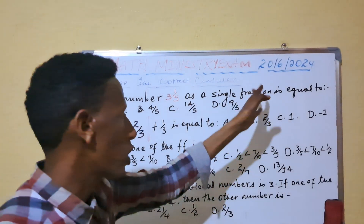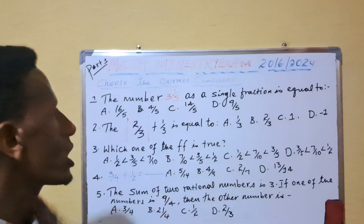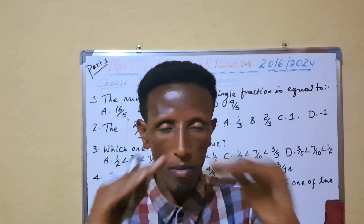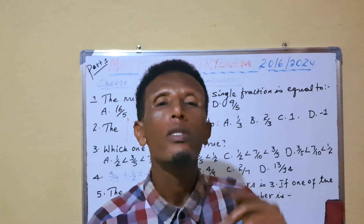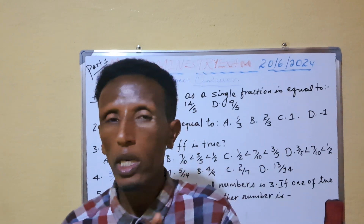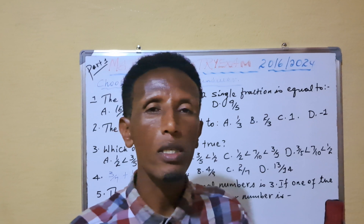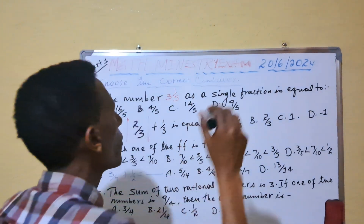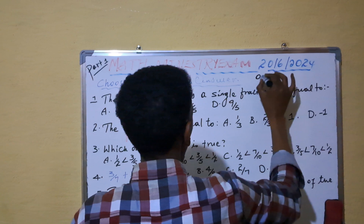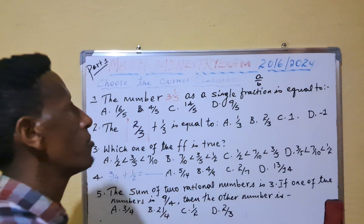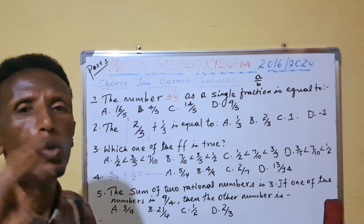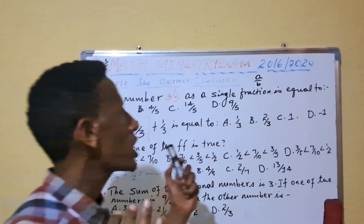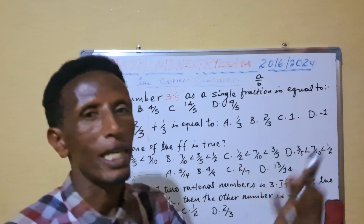It's important to say something about rational numbers. A rational number is a number that can be written in the form of A over B, where A is the numerator and B is the denominator, and B is different from zero — it cannot be equal to zero. Any number that can be written in the form A over B is called a rational number. Rational numbers include whole numbers, integers, and natural numbers, and also contain both fractions and decimal numbers.